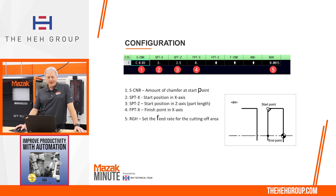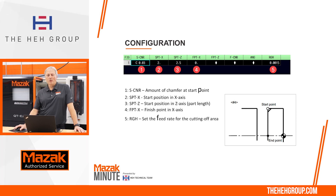In the figure data, you see we're starting at two, start point of Z at two and a half, finish of X at zero. But notice this roughness feed rate — where the feed rate in the sequence data was at three thousandths, I'm showing you a value of a thou and a half. So let's take a look at a few parameters.